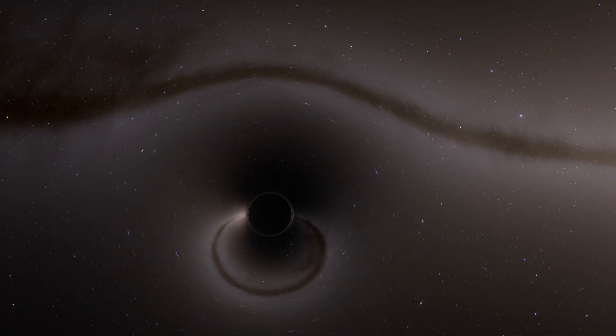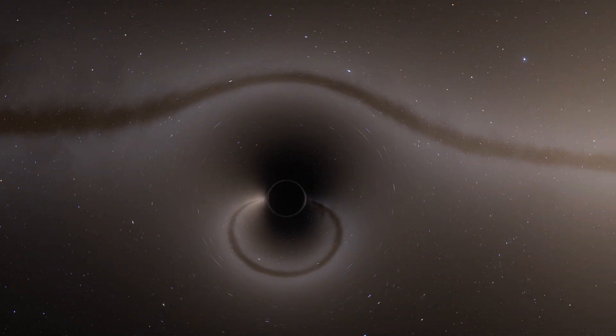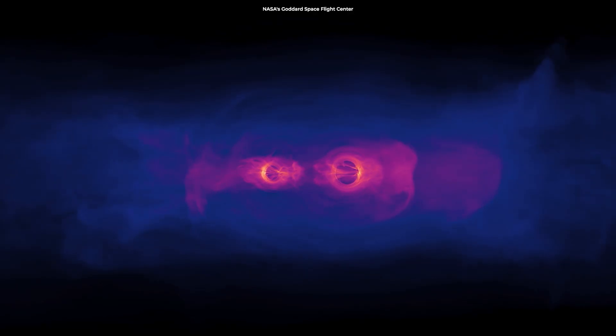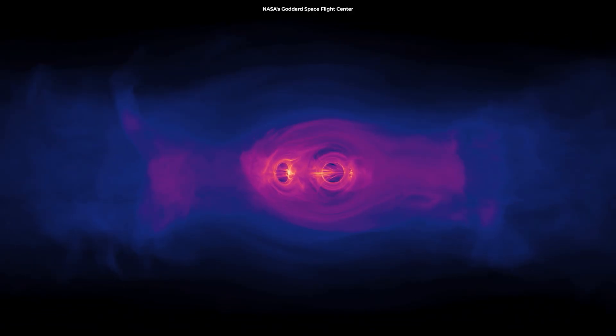Such compact regions then sink to the center of the galaxy, where the intermediate-mass black holes collide and merge to create a supermassive black hole. Supermassive black holes can contain hundreds of millions of times the mass of the Sun.